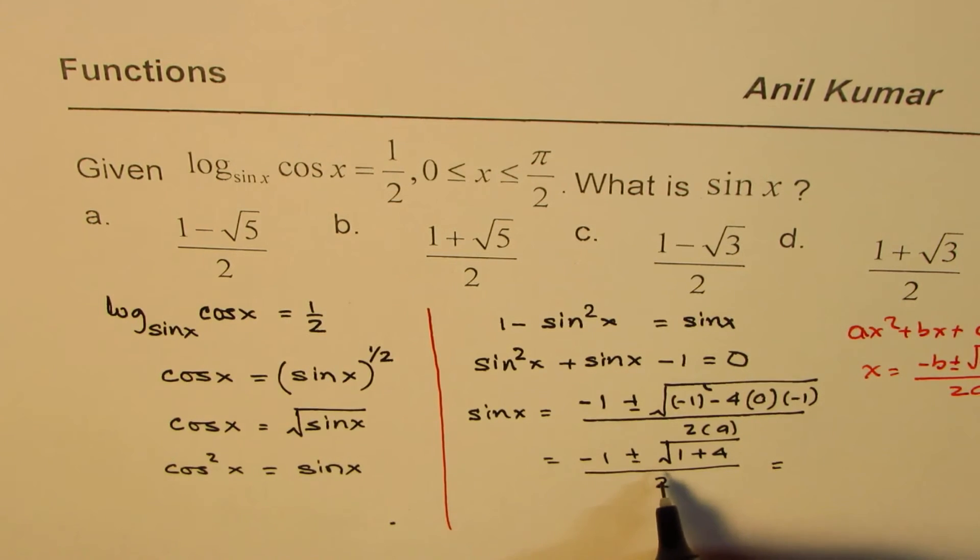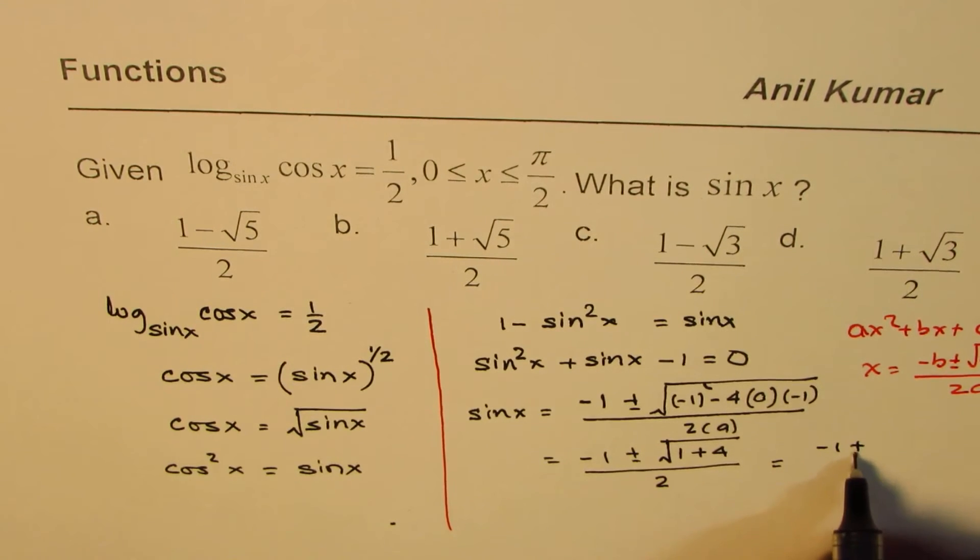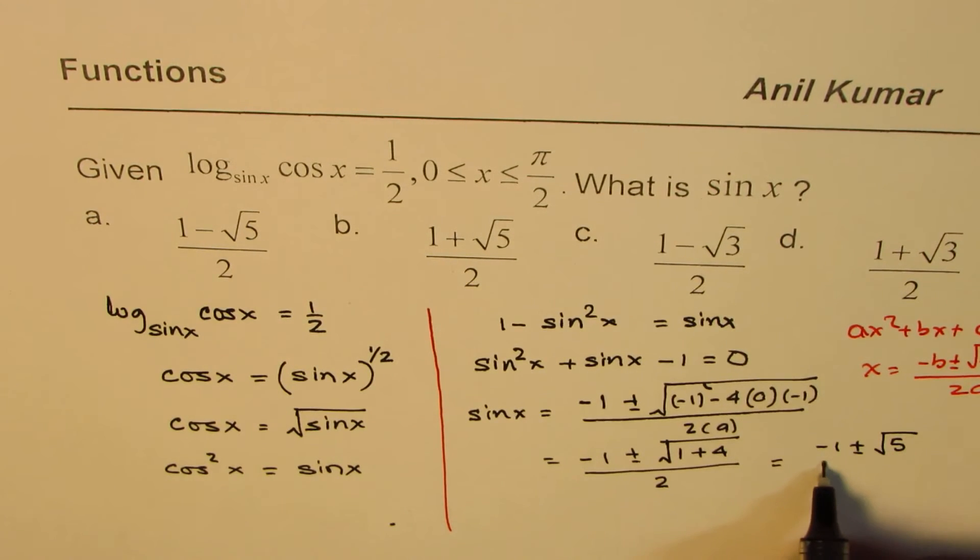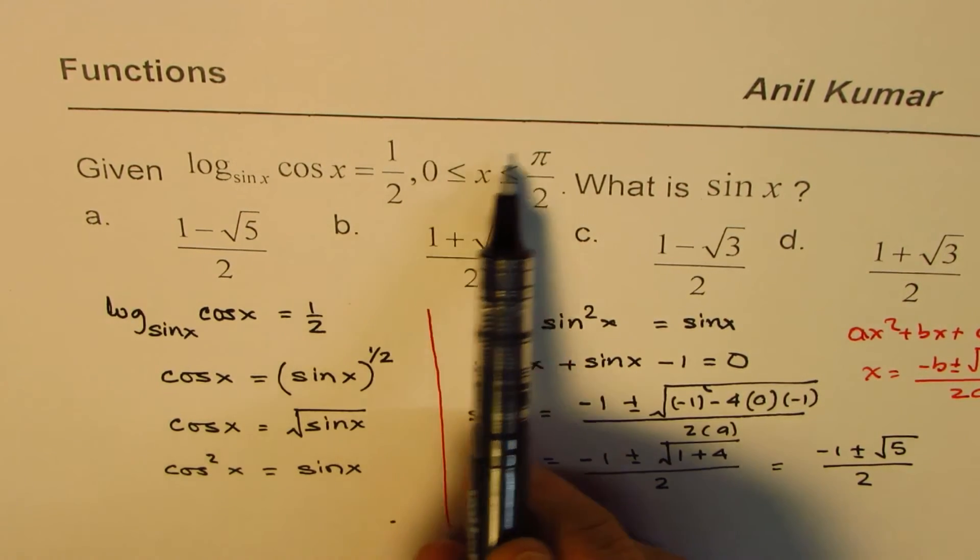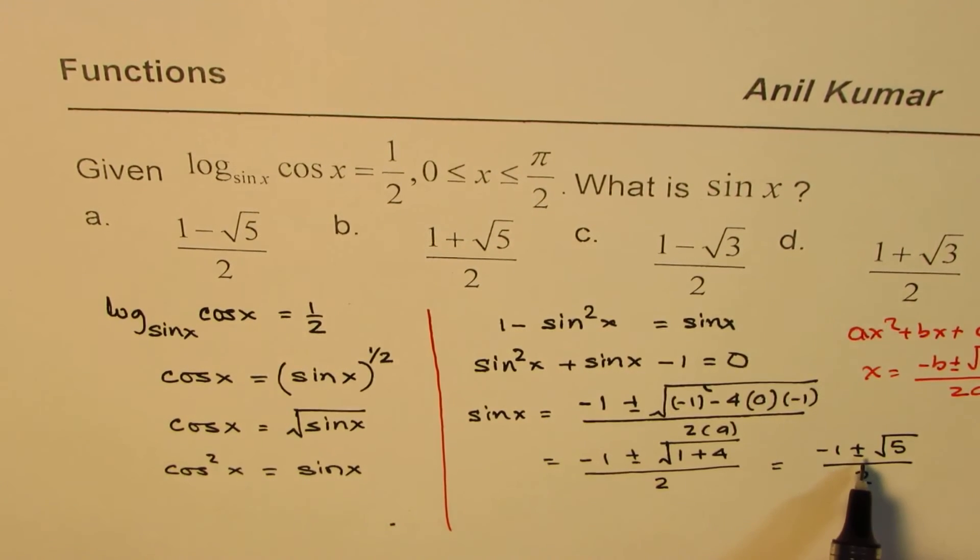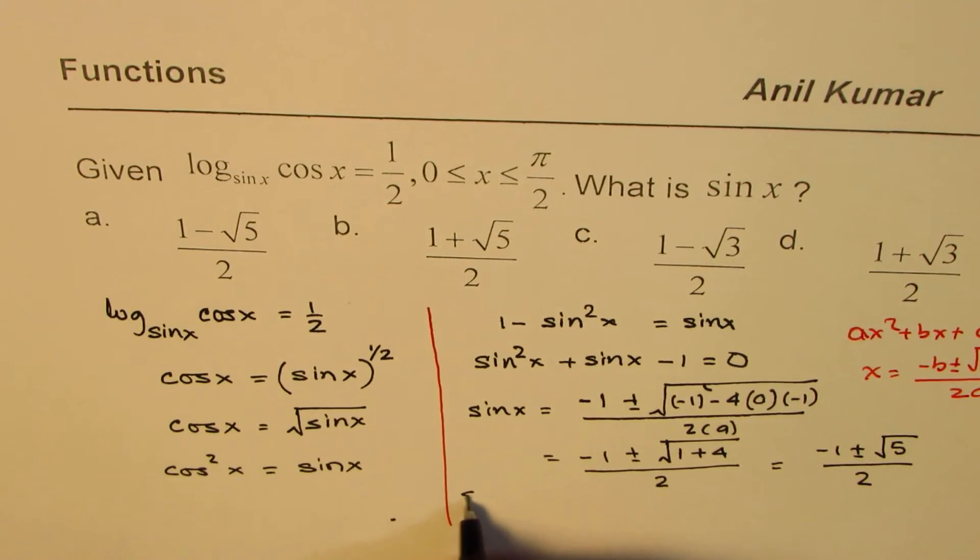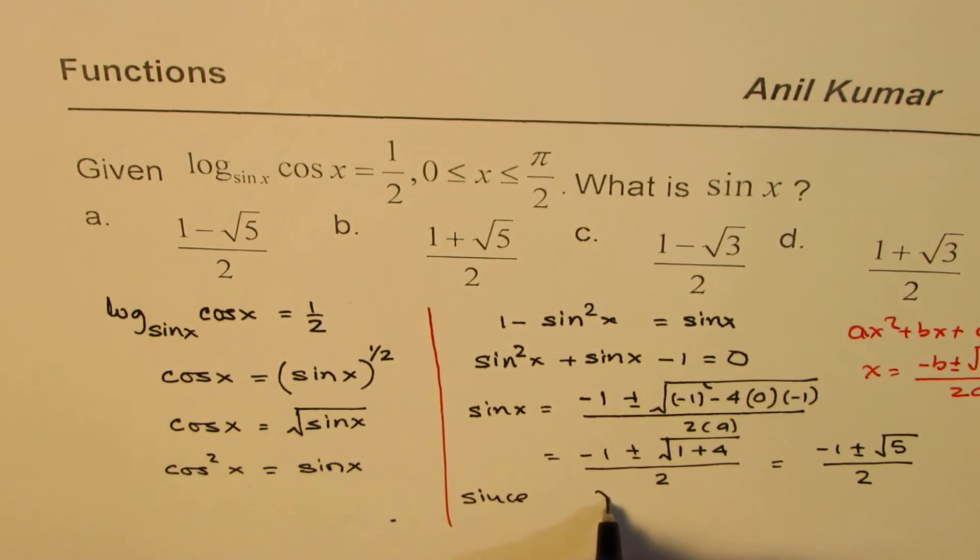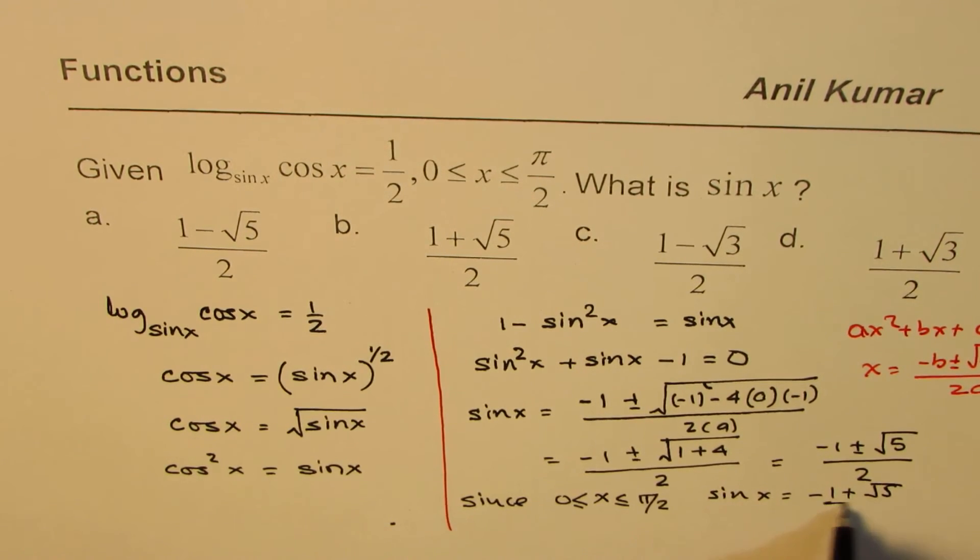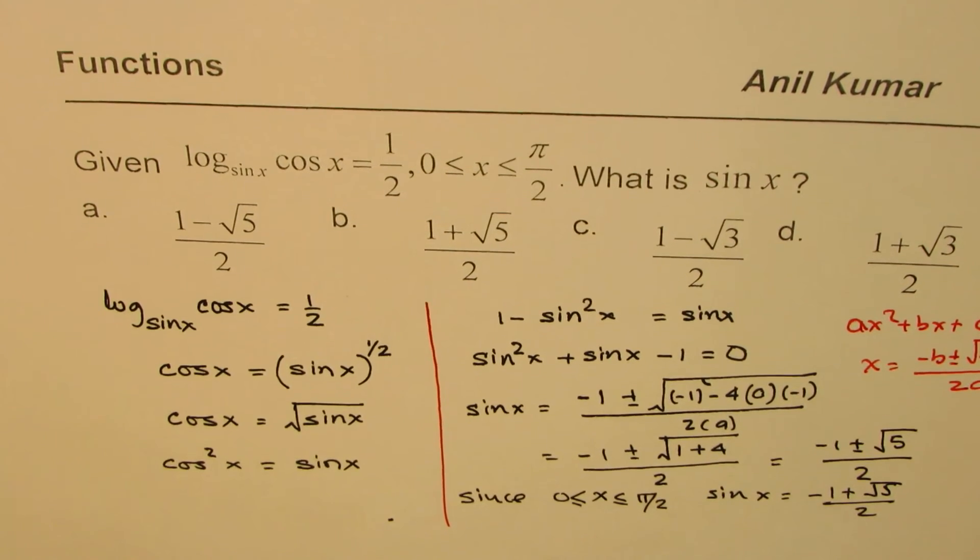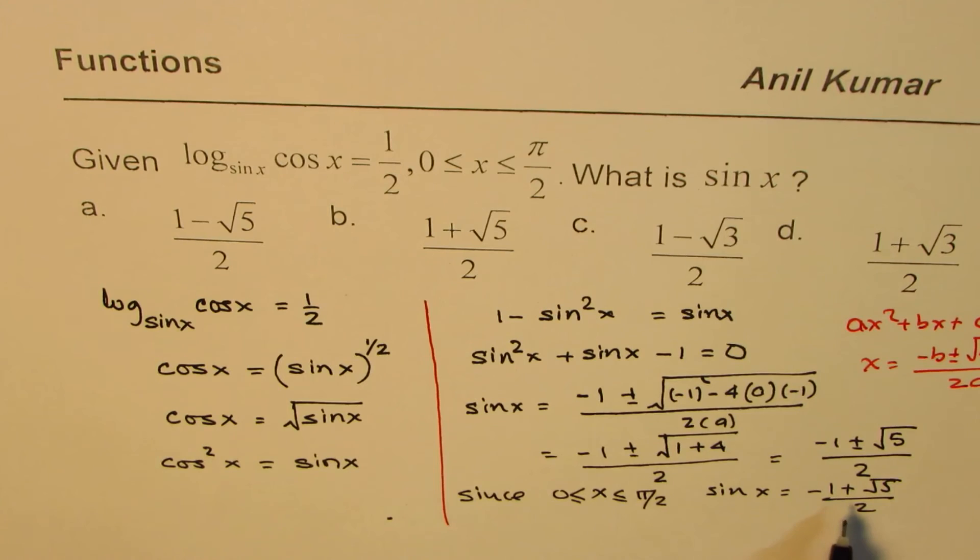Now you've got these options. We get minus 1 plus or minus square root of 5 over 2. Since x is between 0 and π by 2, we're talking about quadrant 1. In quadrant 1, sine x is positive, so it cannot be negative. Sine x should equal minus 1 plus square root 5 over 2. That will yield a positive result.